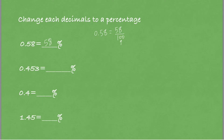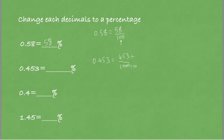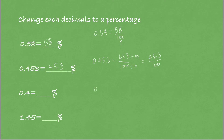Next example: 0.453. In fraction form, 0.453 equals 453 out of 1000. The denominator is 1000, so I need to convert it to a denominator of 100. I divide the denominator by 10, and I also divide the numerator by 10, giving me 45.3 out of 100. Now the denominator is 100, so I write the numerator as it is: 45.3 percent.